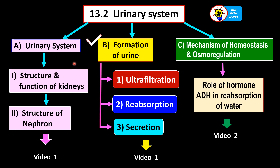We've already finished discussing the urinary system, the kidneys, and the nephron. Let's go on to the formation of urine. It's interesting to find out how urine is actually formed from the blood so that it can be excreted by the kidneys — how the waste products from the blood are extracted to form the urine. The formation of urine consists of three processes: ultrafiltration, reabsorption, and secretion.